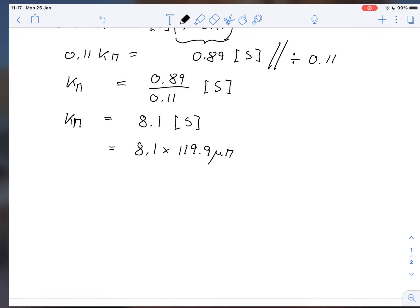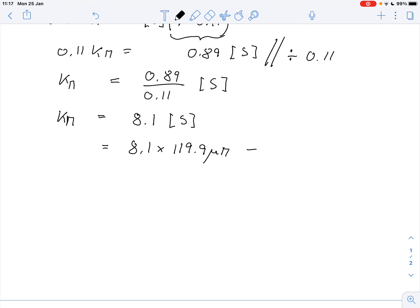So 971.2. And the unit, of course, is micromolar, because we know that the unit for Km is always the same unit as we have for the substrate concentration. So here in our case we can say Km is 971.2 micromolar.